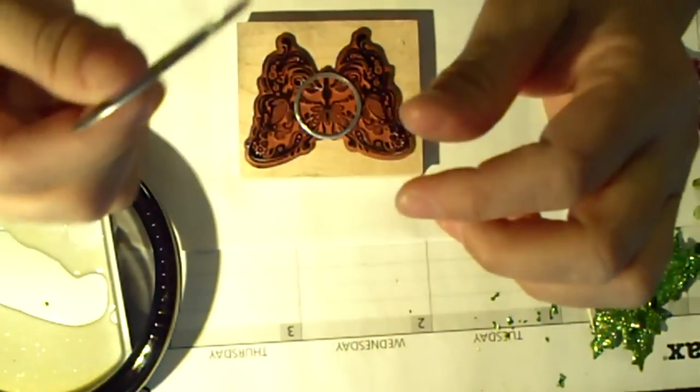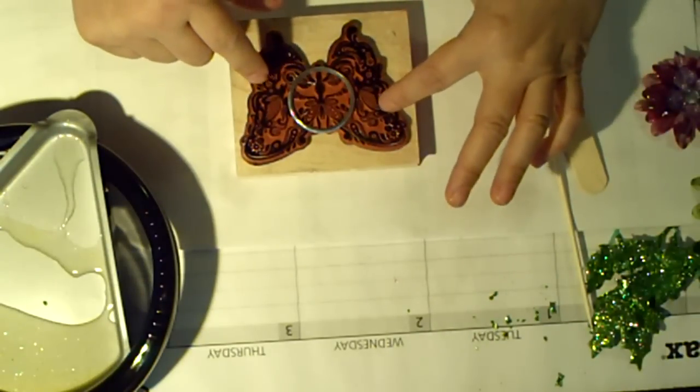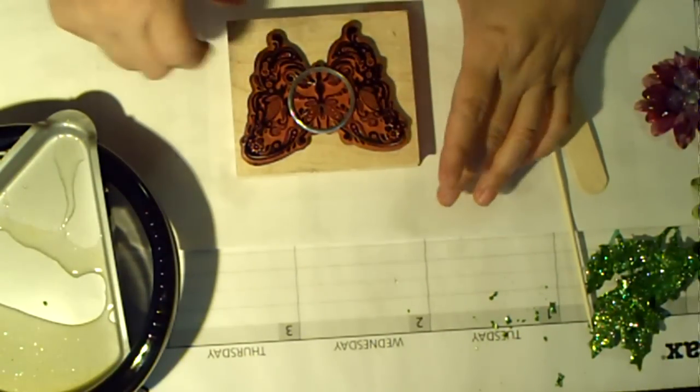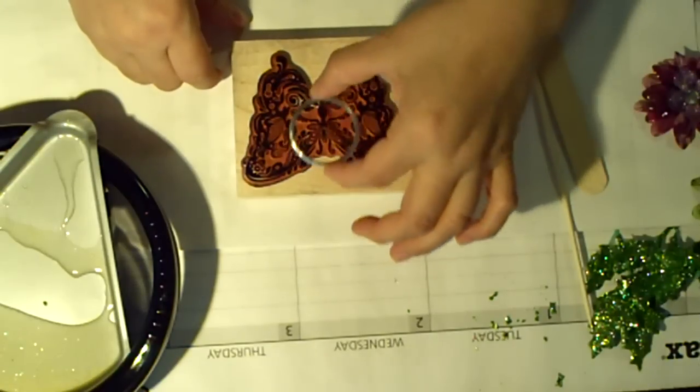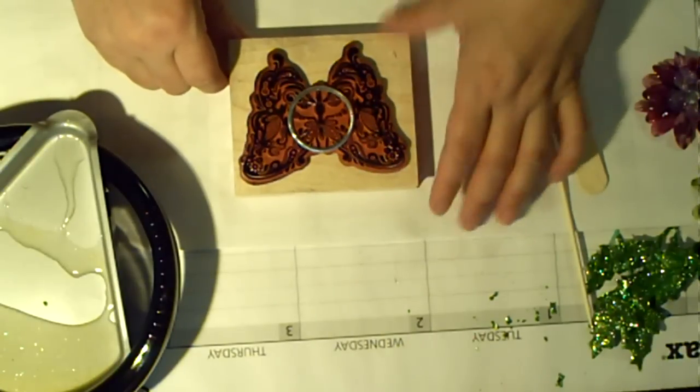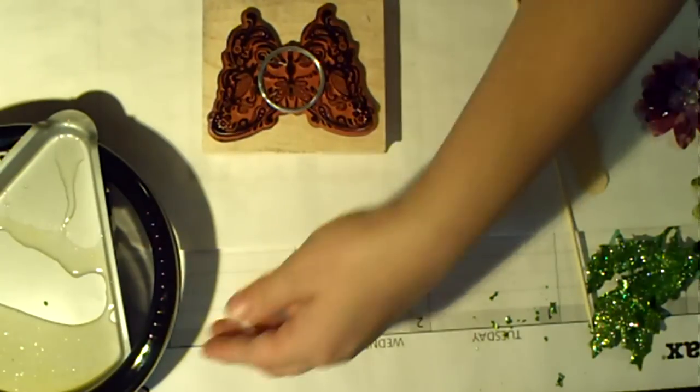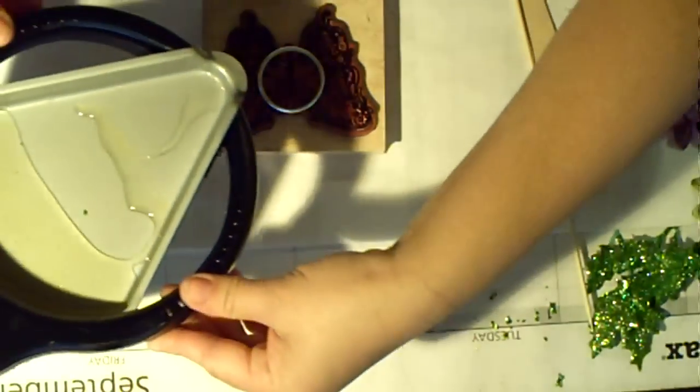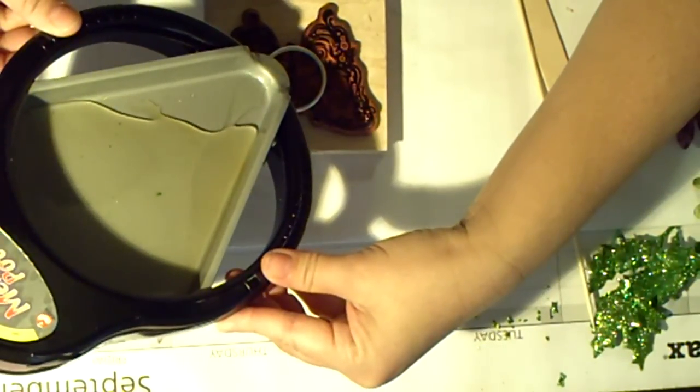So I put this on a wood block. You can use an unmounted stamp as well. I just put this over where I wanted the image or what image I wanted. Then I'm going to take the melting pot and drizzle it into that ring and let it sit.